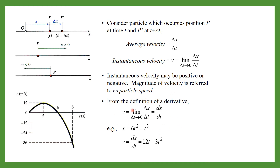From the definition, since the limit as Δt tends to 0 gives us dx/dt, velocity can be written as a derivative. Suppose the equation of motion is x = 6t² − t³. To find velocity you simply differentiate: v = dx/dt = 12t − 3t². You can then calculate velocity by substituting different values of time and obtain the velocity curve.